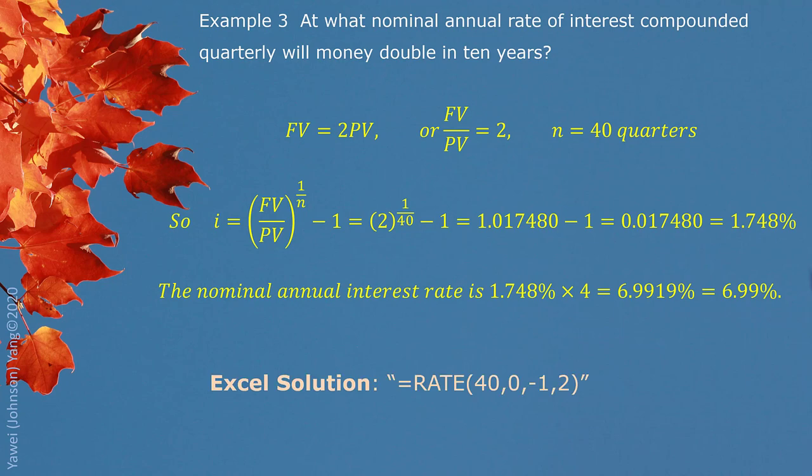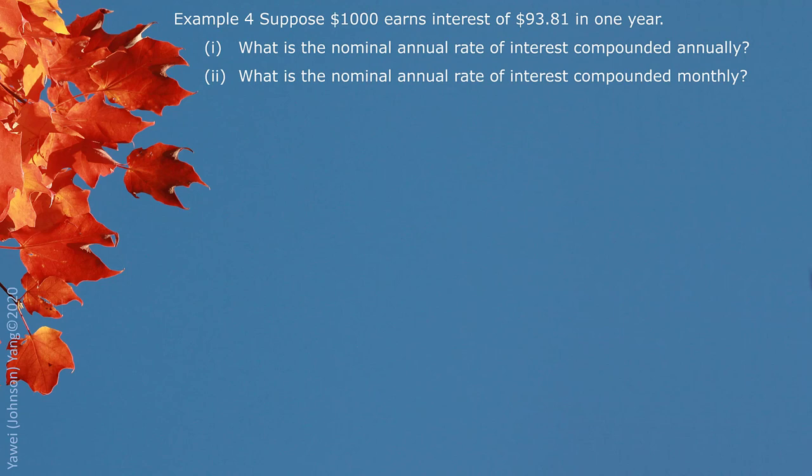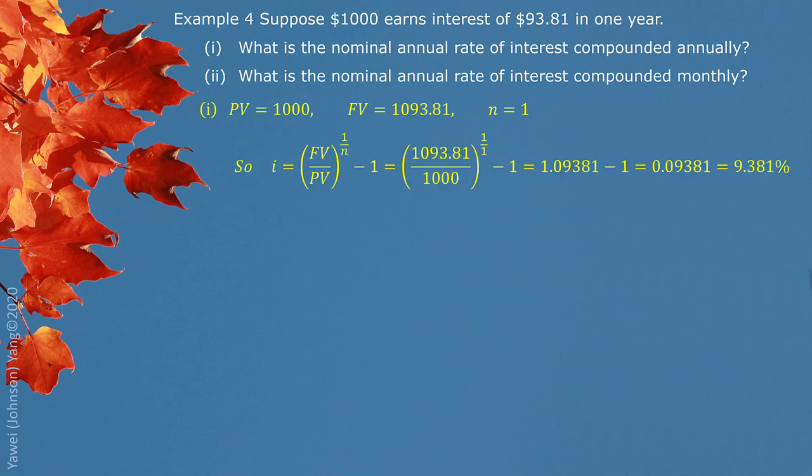Example 4. Suppose $1,000 earned interest of $93.81 in one year. What is the nominal annual rate of interest compounded annually? What is the nominal annual rate of interest compounded monthly? We recognize present value, future value. For the first case, n is 1. One year. So 9.381% is what we are looking for. Compounded annually. This is the nominal annual interest rate.